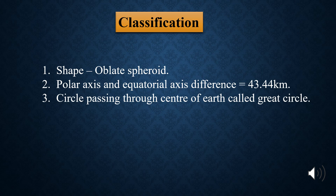The difference between polar axis and equatorial axis is 43.44 km. This is an important question asked in exams. Polar axis is shorter than the equatorial axis and the difference between them is 43.44 km. The next term is great circle — the circle passing through the center of earth horizontally is known as the great circle.